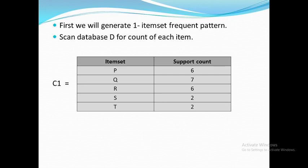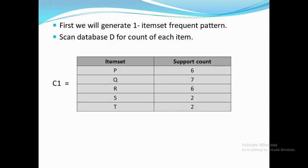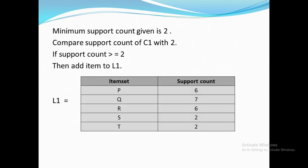Now by using C1 we will find out L1. L1 means frequent list 1. The item sets which satisfy the minimum support count condition will be added to list L1. If the support count of each and every element is greater than or equal to 2, then and only then we will add that element to L1. Here you can see all elements from C1 have a support count greater than or equal to 2, hence all elements are moved to list L1 because all items satisfy the condition.